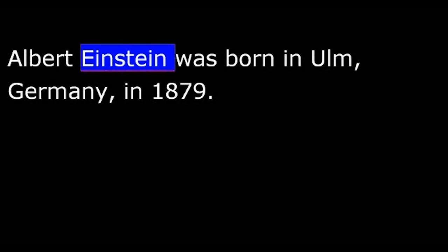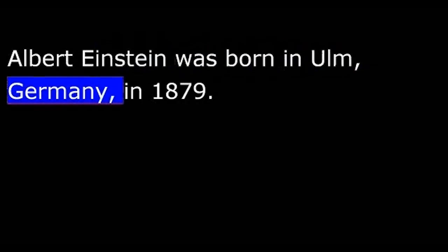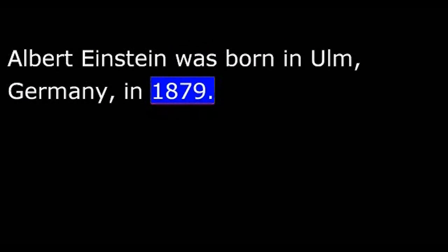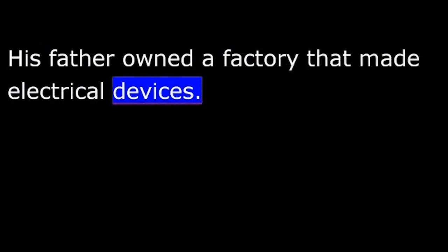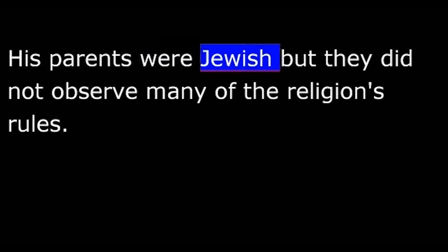Albert Einstein was born in Ulm, Germany, in 1879. His father owned a factory that made electrical devices. His mother enjoyed music and books. His parents were Jewish, but they did not observe many of the religion's rules. Albert was a quiet child who spent much of his time alone. He was slow to talk and had difficulty learning to read.